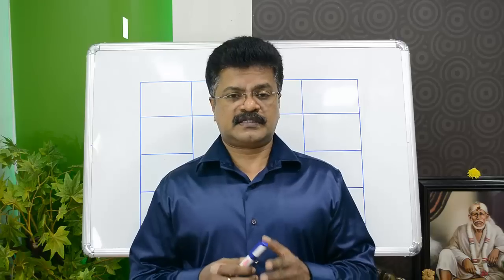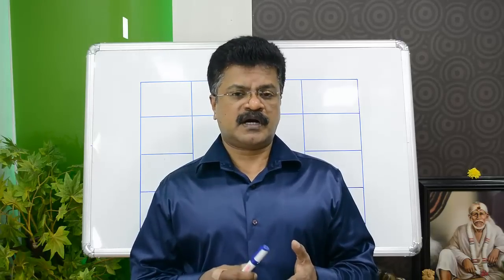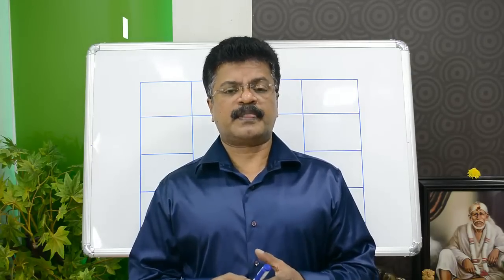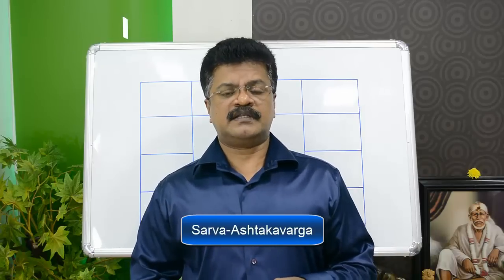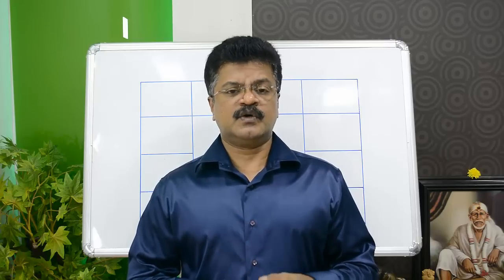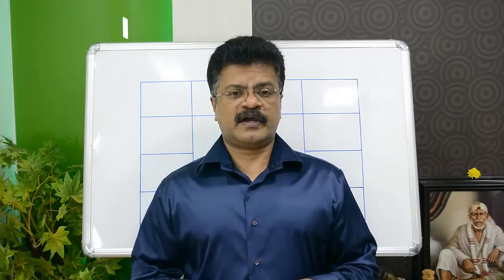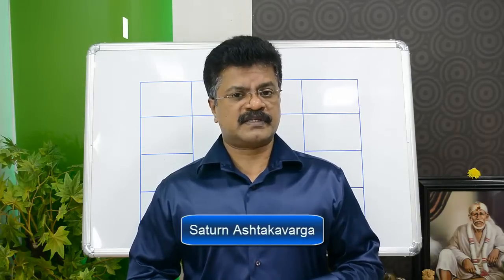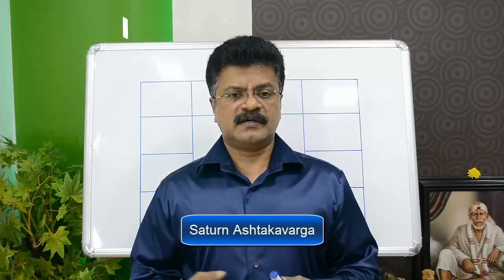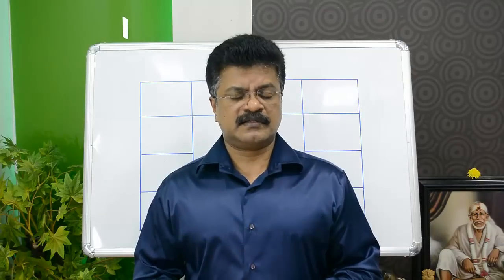You will find Ashtaka Varga for each planet — Sun, Moon, Mars, up to Saturn. If you add up the whole thing, you get what is called the Sarva Ashtaka Varga, which is all the Ashtaka Vargas combined. In this lesson, I am going to talk about the Ashtaka Varga of Saturn, or Shani, which will come in very handy if you want to find the results of Saturn's transit. This is the objective of this video.